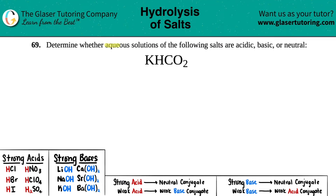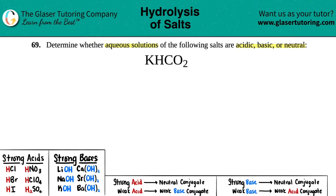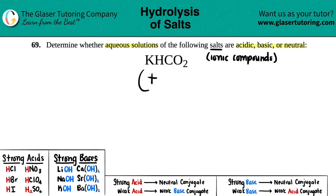Number 69: determine whether aqueous solutions of the following salts are acidic, basic, or neutral. We have KHC0₂ — is this acidic, basic, or neutral? The first thing we're going to do is take these salts — another word for a salt is just ionic compound — and break it up into its two ions. Any ionic compound has two ions: one positive and one negative. We need to know where the break is.